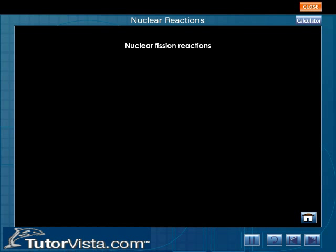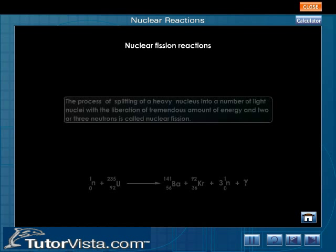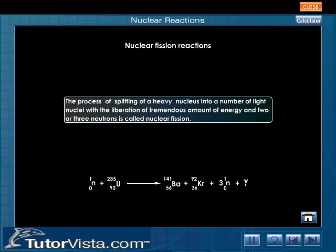Nuclear fission reactions: The process of splitting of a heavy nucleus into a number of light nuclei with the liberation of a tremendous amount of energy and two or three neutrons is called nuclear fission.